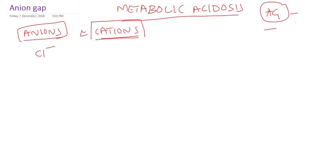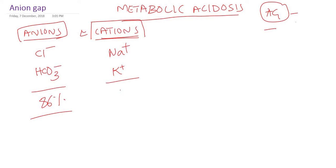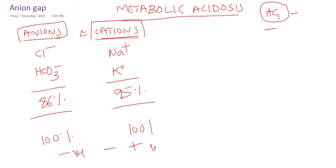Normally we measure chloride and bicarbonate as anions — these are about 86% of total anions. Normally measured cations are sodium and potassium, about 95% of total cations. But we have 100% of anions and 100% of cations. The number of positively charged ions and negatively charged ions are equal in our body, but we normally measure only these two anions and these two cations.